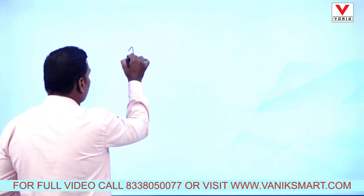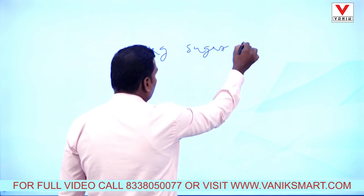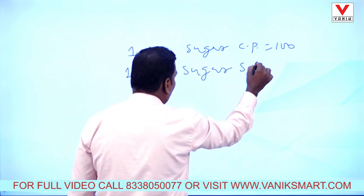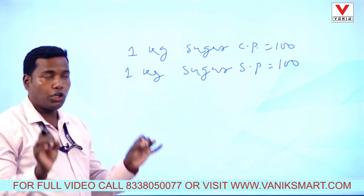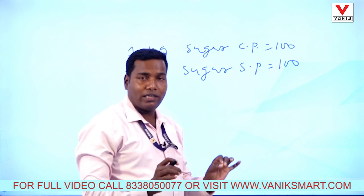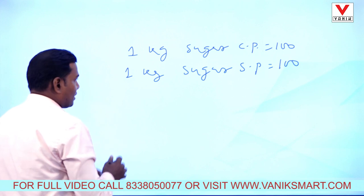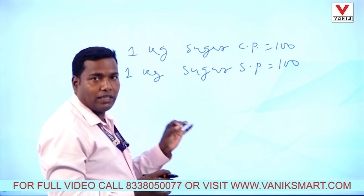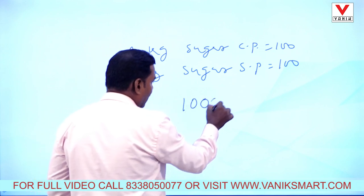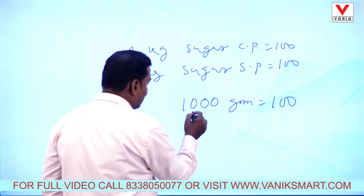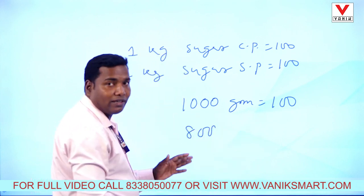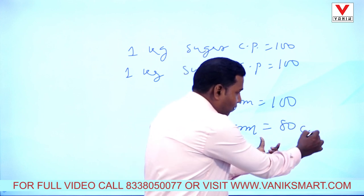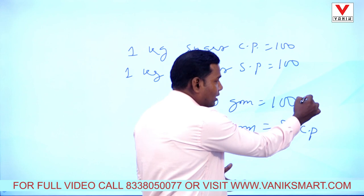Suppose 1 kg sugar cost price is 100 rupees and selling price is also 100 rupees — cost price and selling price both are equal. The person sells his sugar 20 percentage less in weight. 1000 grams at 20% less means 800 grams, so cost price is 80 rupees. 20 percentage less means the cost price of 800 grams is 80 rupees, and 1 kg cost price is 100 rupees.